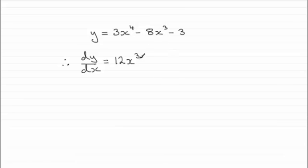Similarly, for this next term, minus 8 times 3 is going to be minus 24. Reduce the power by 1, so that's going to give us x to the power 2, so we get minus 24x squared.